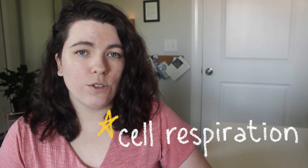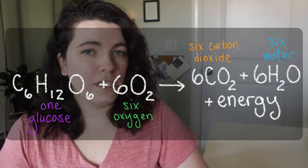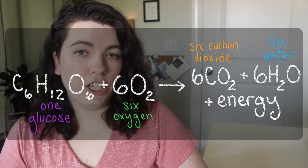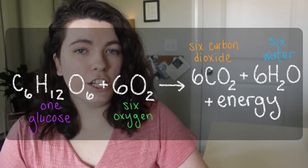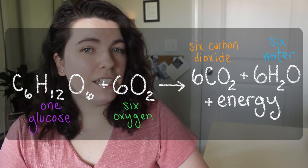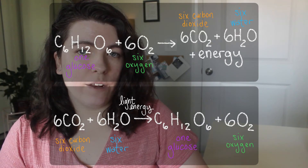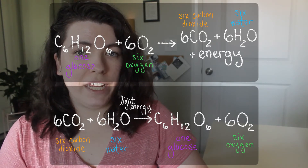So back to photosynthesis: plant cells use photosynthesis to store energy as glucose and other carbohydrates. Then, when a cell needs energy, it uses a process called cell respiration to access that stored energy. Here's the chemical equation for cell respiration. This equation takes oxygen and glucose and transforms them into usable energy, with byproducts of carbon dioxide and water. This is the opposite of the photosynthesis equation, which took carbon dioxide, water, and energy and transformed them into glucose and oxygen.